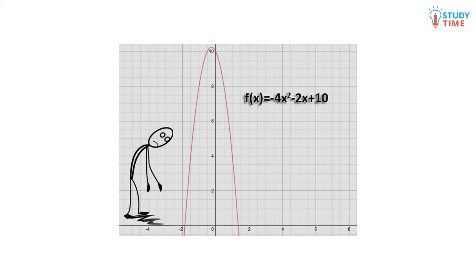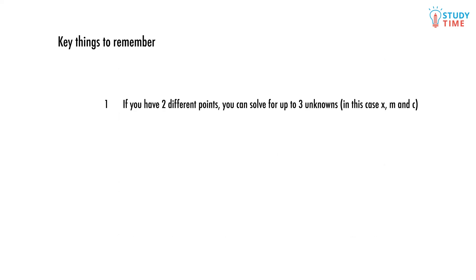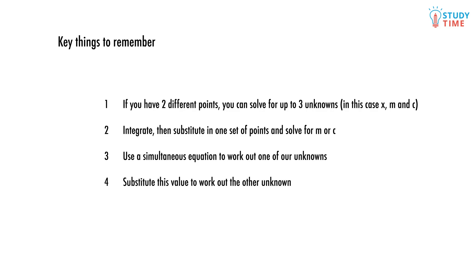Here's some things to remember: If you have two different points, you can solve for up to three unknowns—in this case x, M, and C. Integrate, then substitute in one set of points to solve for M or C. Use a simultaneous equation to work out one of our unknowns. Substitute this value to work out the other unknown, then combine all the information together to get the full equation.